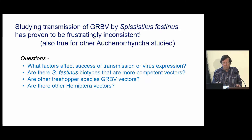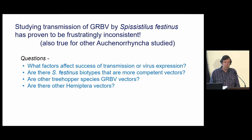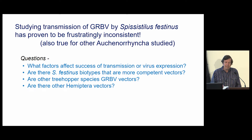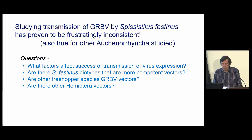Beyond that, we were interested in studying the actual transmission of grape red blotch virus — things like what factors affect success in transmission and whether there are certain biotypes that might be more competent vectors. As we get further into this, we're starting to determine that there are a lot of things we don't know about transmission, because the transmission studies we've done have been notoriously inconsistent. Sometimes we get no transmission at all, sometimes very poor transmission. We also wonder if there are other treehopper species or even other hemipteran vectors that might be involved, and there are a lot of ongoing studies by us and other labs looking at that.